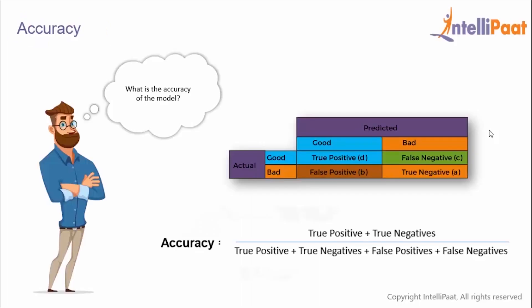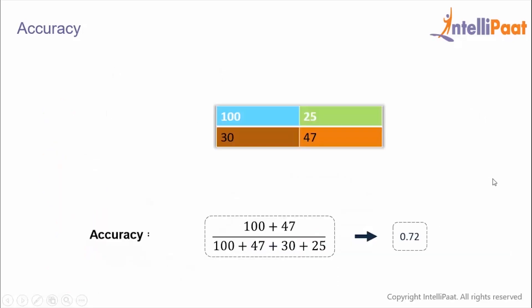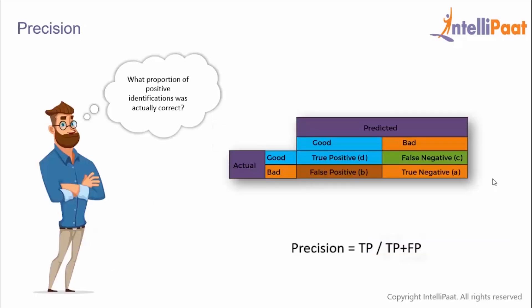Now we'll look at some performance metrics. Starting with accuracy: we get accuracy by dividing the true positives and true negatives by all of the values — the left diagonal divided by all values. For example, with 100 true positives and 47 true negatives, we add them up and divide by all values to get an accuracy of 0.72.